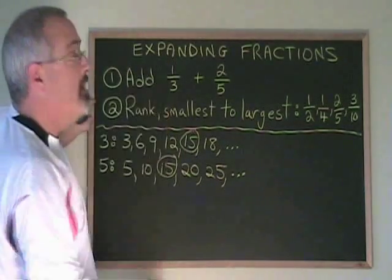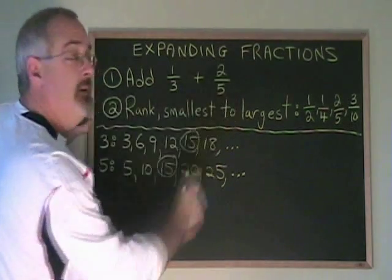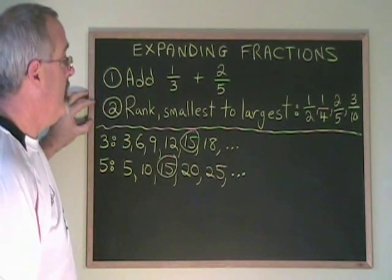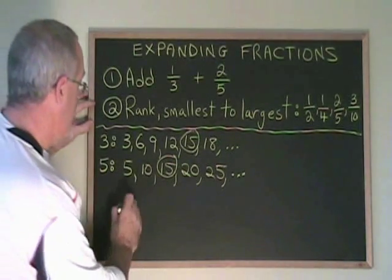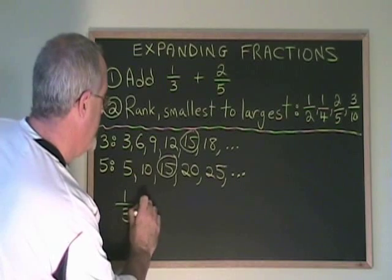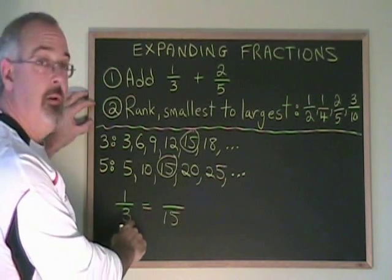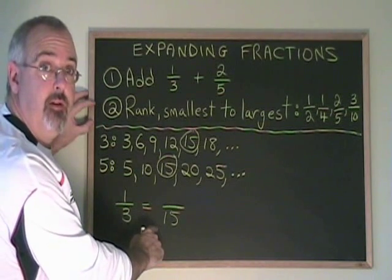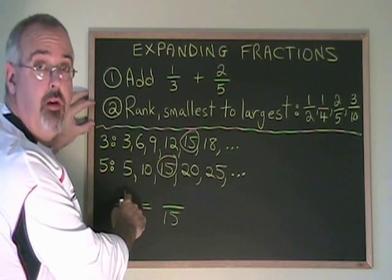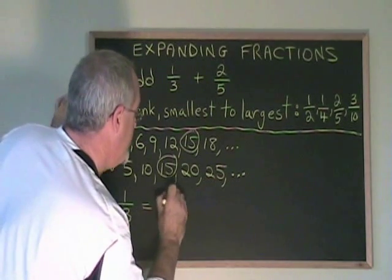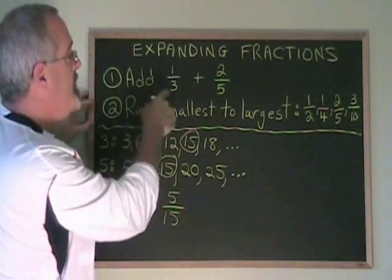Let's finish off by answering question 1. We have to write 1/3 and 2/5 over the common denominator. To get 1/3 to be over a denominator of 15, we have to multiply our 3 by 5. If we're multiplying the bottom by 5, we have to multiply the top by 5, and 1 times 5 is 5. 5/15 is the expanded version of 1/3.